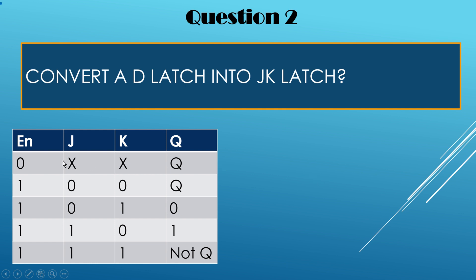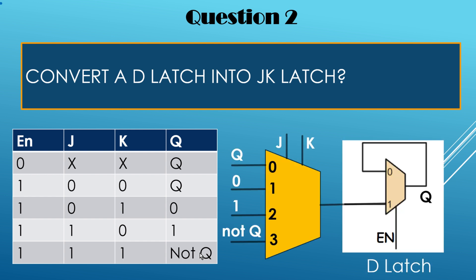As per the truth table of a JK latch, it has three inputs: Enable, J, and K. When Enable is 1 and J and K are both 0, the output is latched. When Enable is 1, J is 0 and K is 1, output is 0. When J is 1 and K is 0, output is 1. When both J and K are high, the output is the inverse of its previous value.